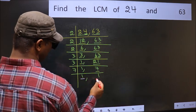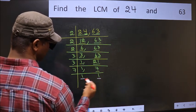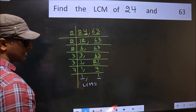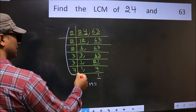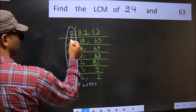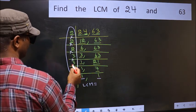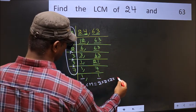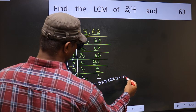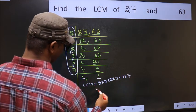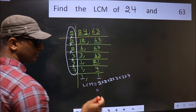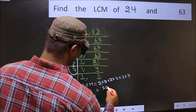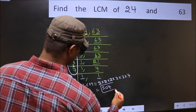So we got 1 in both places. Our LCM is the product of these numbers: 2 times 2 times 2 times 2 times 3 times 3 times 7. When we multiply these numbers, we get 504. So 504 is our LCM.